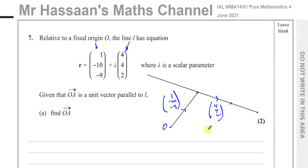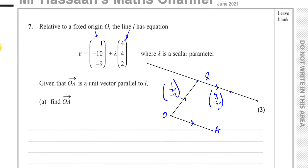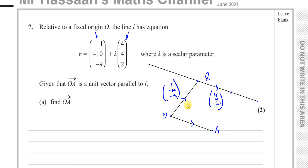It says that O to A is a unit vector parallel to L. So if O to A is parallel to the line L, then the vector OA points in the same direction as the direction vector (4, 4, 2), but O to A is a unit vector — it is one unit long only.